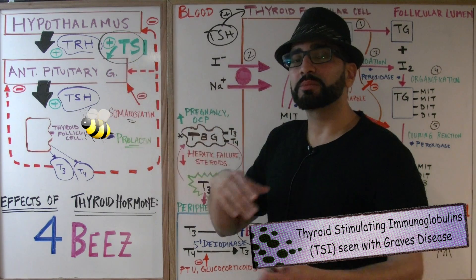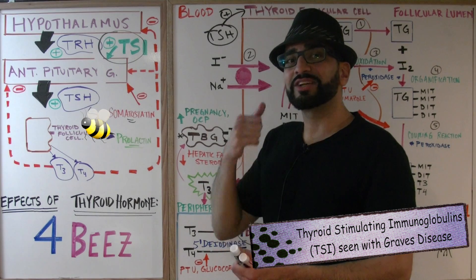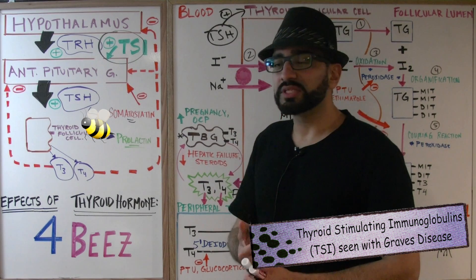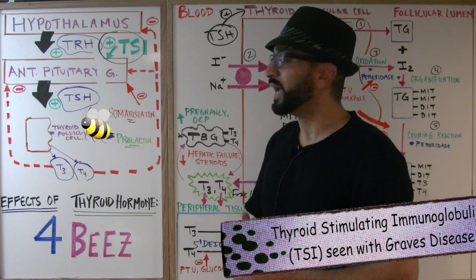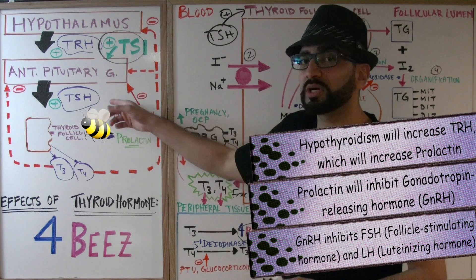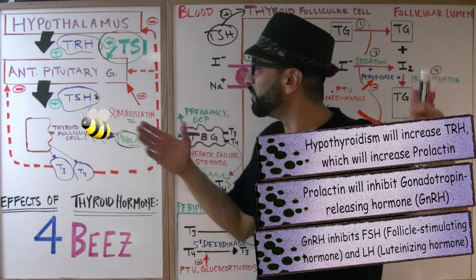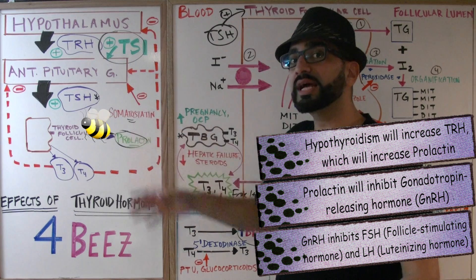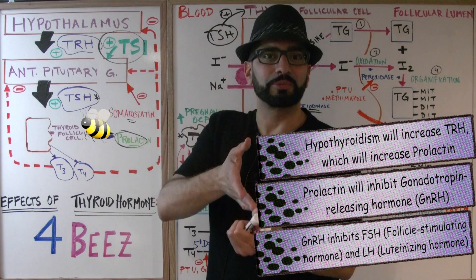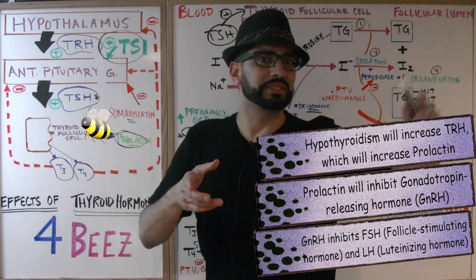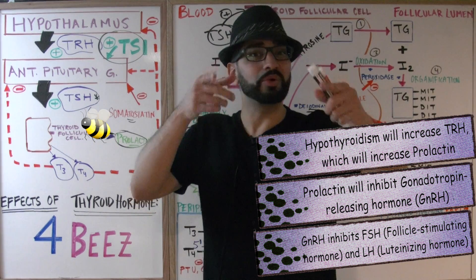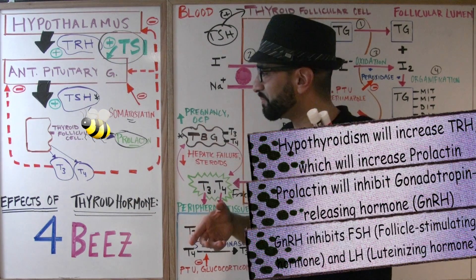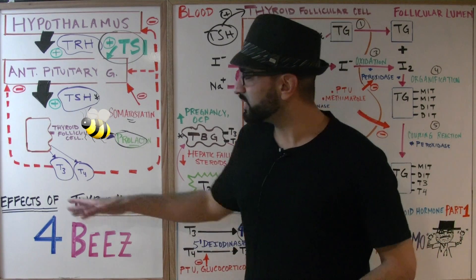TSI — thyroid stimulating immunoglobulins — stimulate the release of more T3 and T4 than normally needed. You'll see this in next week's lecture on Graves' disease, an autoimmune disease causing too much T3 and T4. Also relevant for next week's pathology: hypothyroidism will stimulate prolactin, which can cause sexual problems.